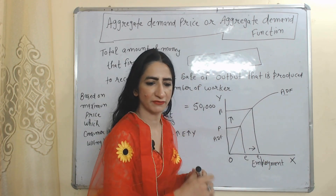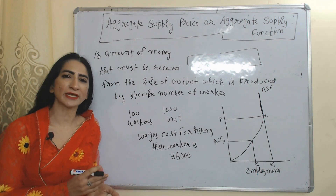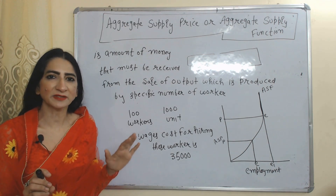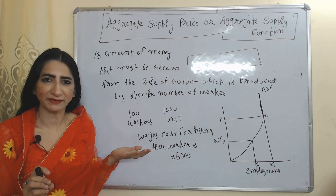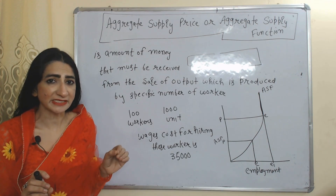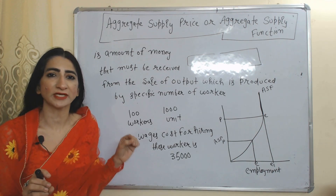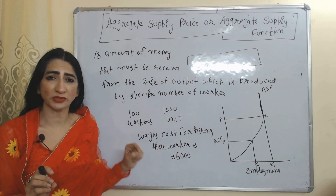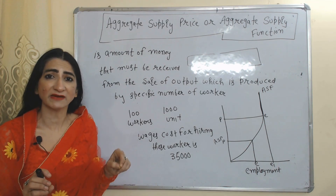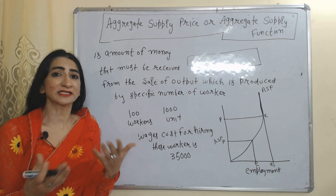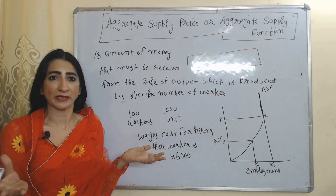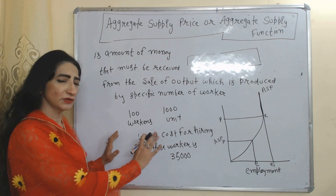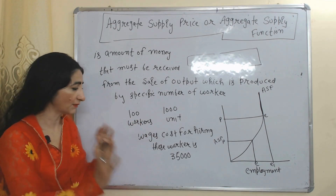Now we are going to talk about aggregate supply price, or aggregate supply function. Aggregate supply price is the total amount of money that a firm must receive from the sale of output produced by a specific number of workers. If the firm does not receive this amount, it will not be able to cover its wages cost.